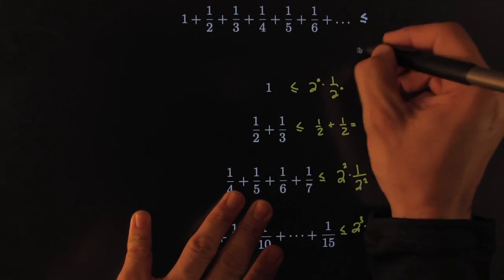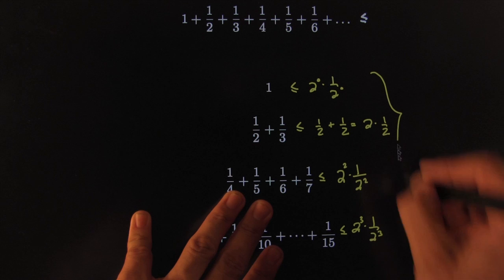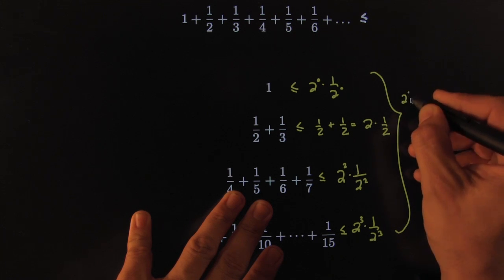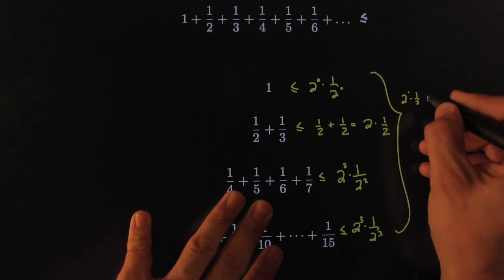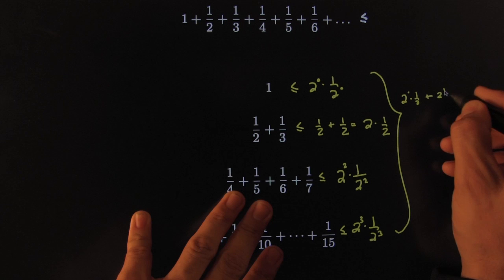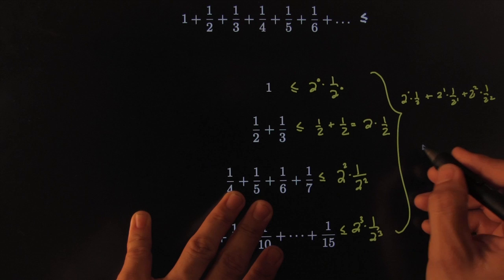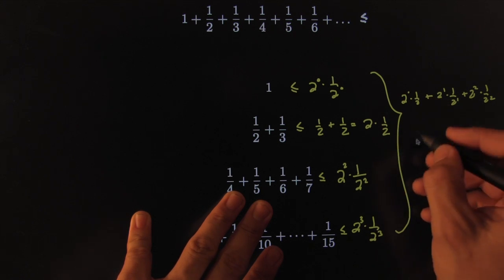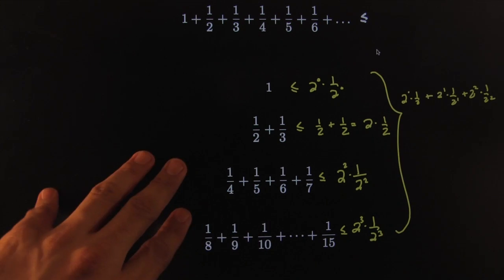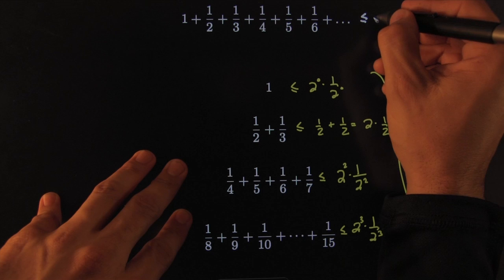This is smaller than 2 to the 0 times 1 over 2 to the 0 plus 2 to the 1 times 1 over 2 to the 1 plus 2 to the 2 times 1 over 2 to the 2, etc. You could say that this entire series is less than or equal to, I'll summarize it right here on top so that you can keep this.